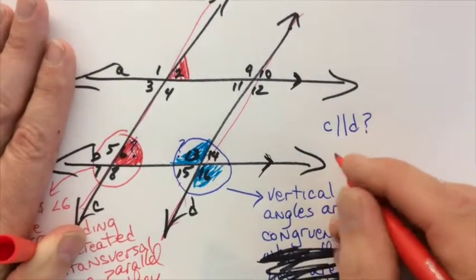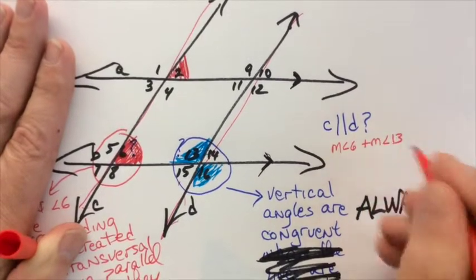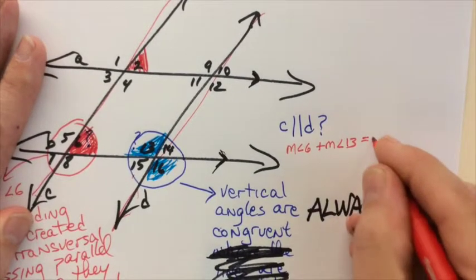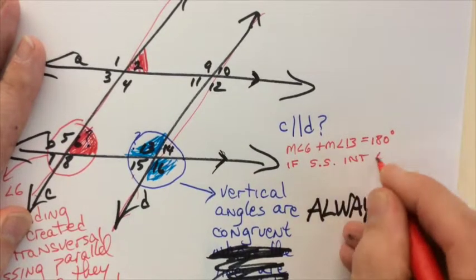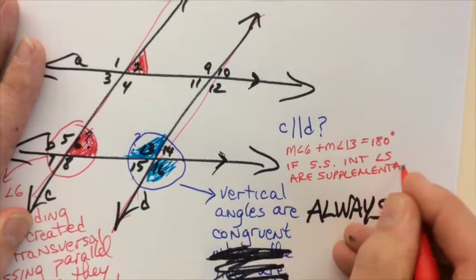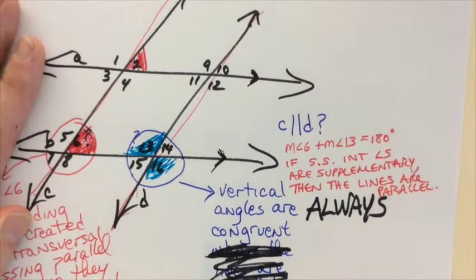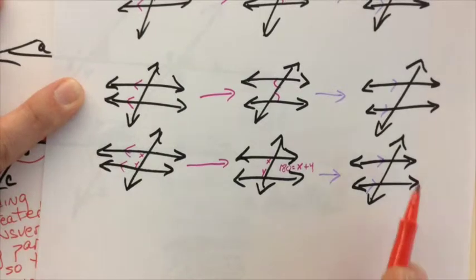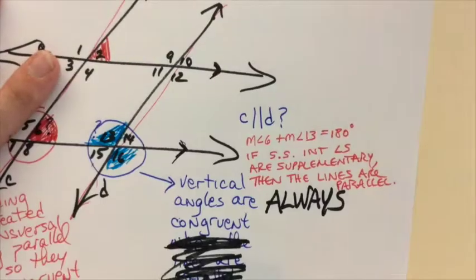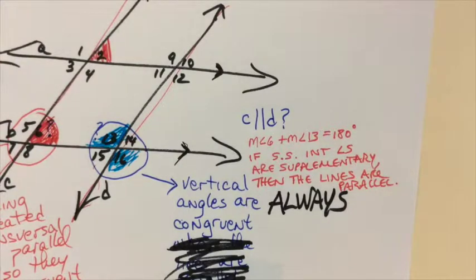And as it turned out, the measure of angle 6 plus the measure of angle 13 equals 180 degrees, and if same side interior angles are supplementary, then the lines are parallel. That'd be this one right here. I know you can't draw the drawings. You've got to use the words. You've got to be able to write the sentence. If same side interior angles are supplementary, then the lines are parallel. Does it have to be exactly those words? No.